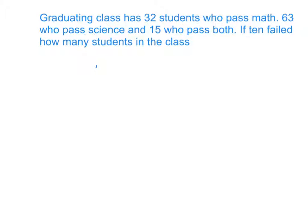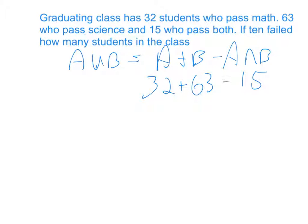With the formula, I know this will tell me how many students are taking the classes. I know there's 32 here, there's 63 here, and there's 15 here. So now I can just punch this into my calculator: 32 plus 63 minus 15.